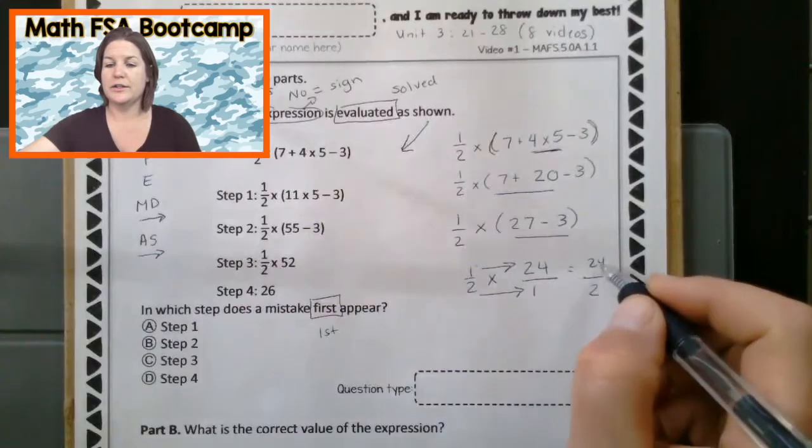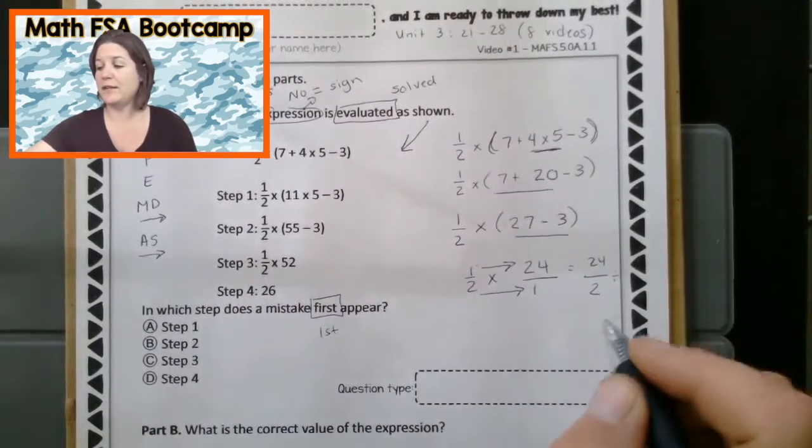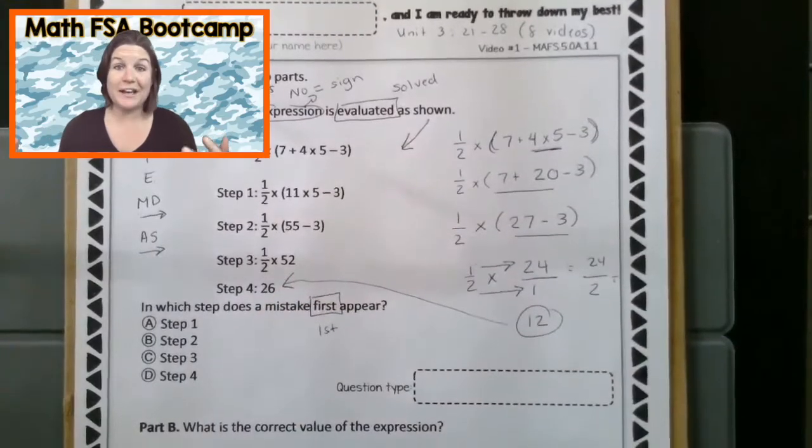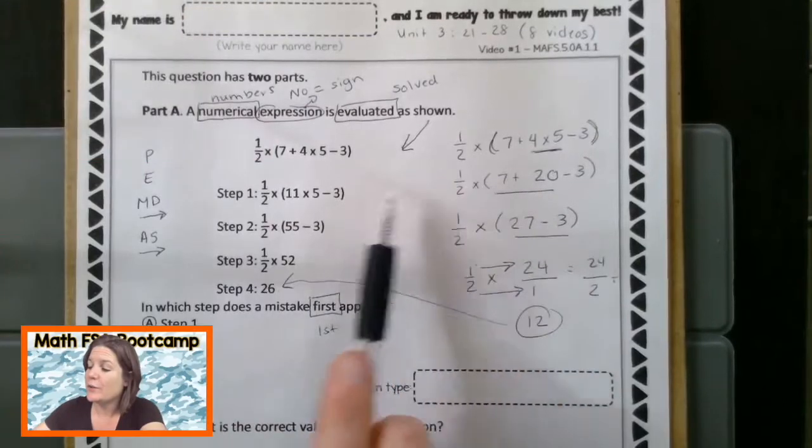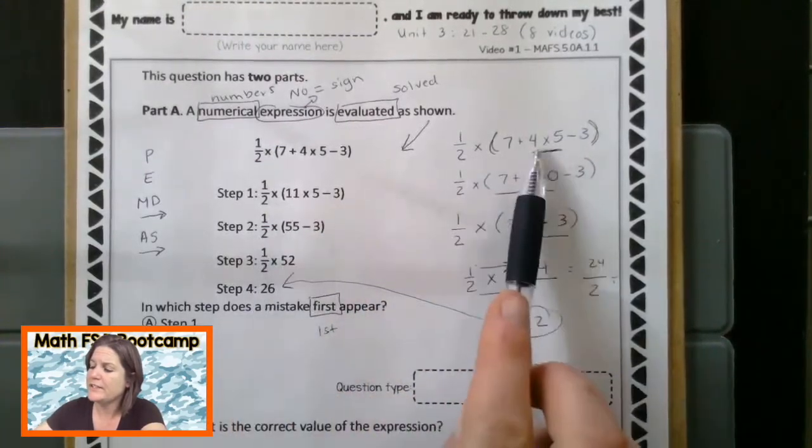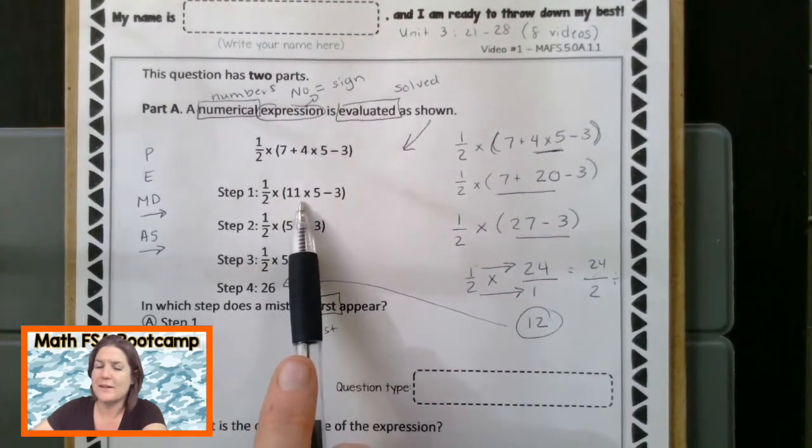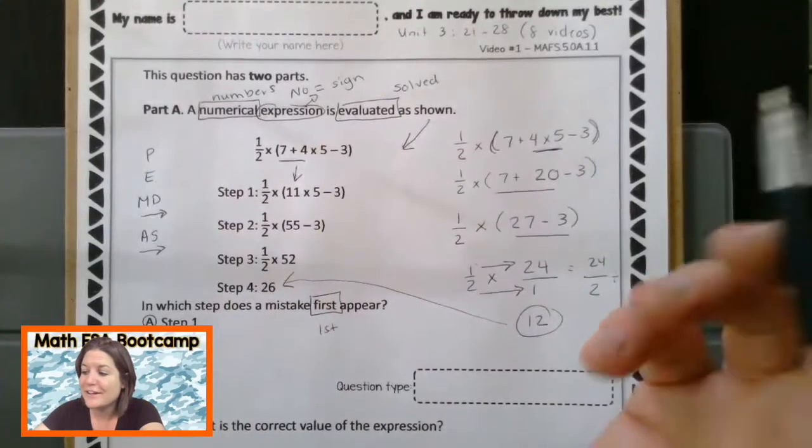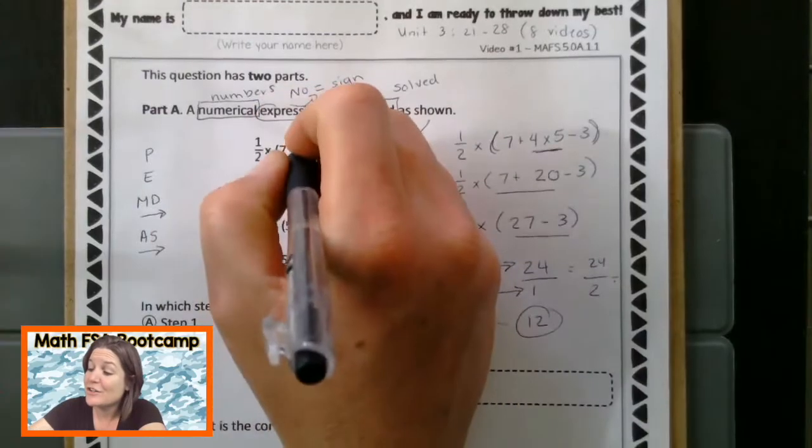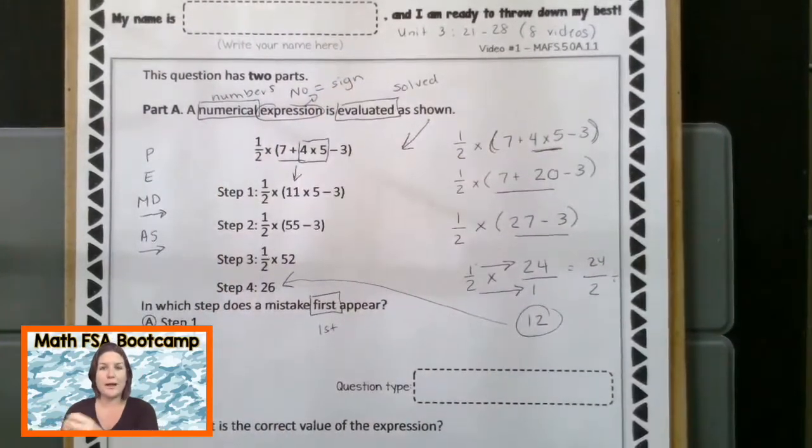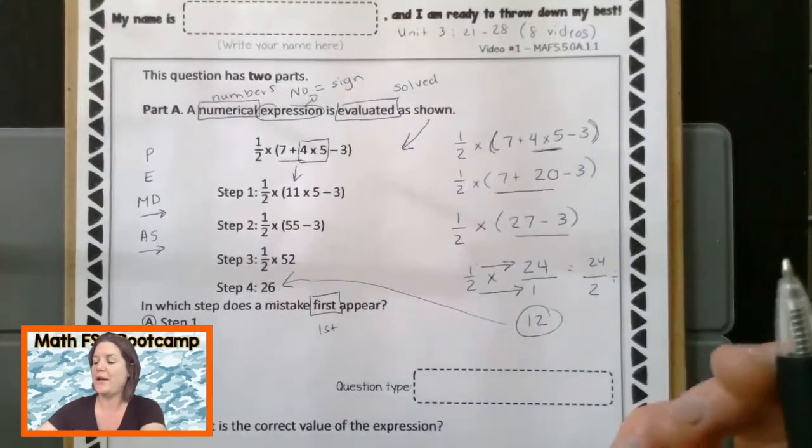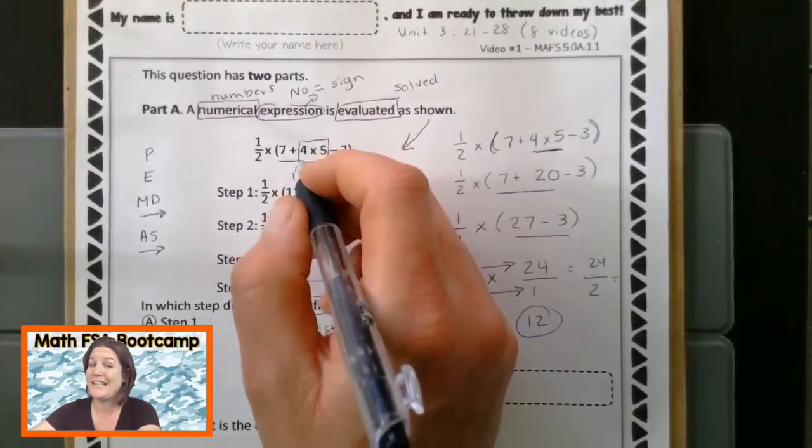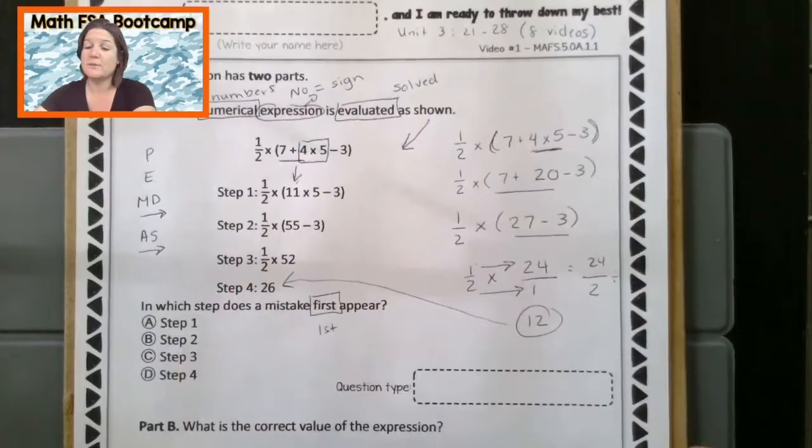And now we have 24 divided by two. This fraction bar right here, 24 divided by two is the same thing. And that would actually be 12, which is not the answer right there. So there was definitely a mistake, right? Let's go back and figure out where that was. So let's see the very first step they did. Well, we did four times five first, but what does it look like they did in step one right here? Yeah, they did seven plus four to get 11. What should they have done first though? Yeah, they should have multiplied. Do you see how I'm marking up my text? I'm showing all my work here, really thinking through this problem. That's what we're expecting for you.